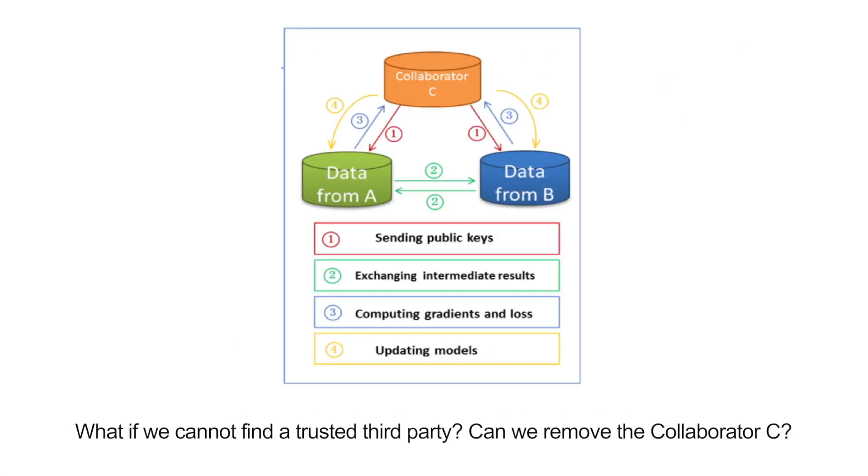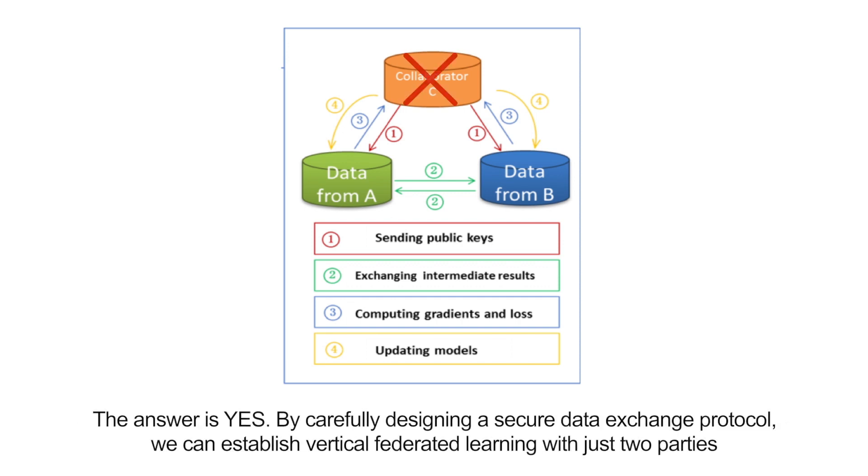What if we cannot find a trusted third party? Can we remove the collaborator C? The answer is yes. By carefully designing a secure data exchange protocol, we can accomplish Vertical Federated Learning with just two parties.